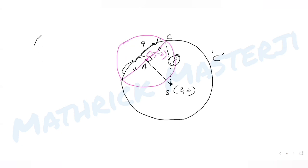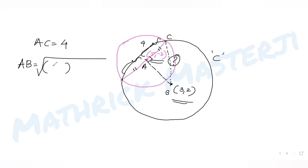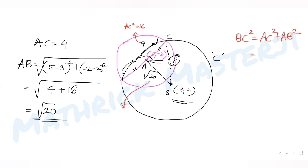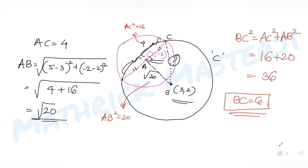Using the distance formula to find AB — the distance between centers (5, -2) and (3, 2): AB = √((5-3)² + (-2-2)²) = √(4 + 16) = √20. Now applying Pythagoras: BC² = AC² + AB² = 16 + 20 = 36, so BC = 6.